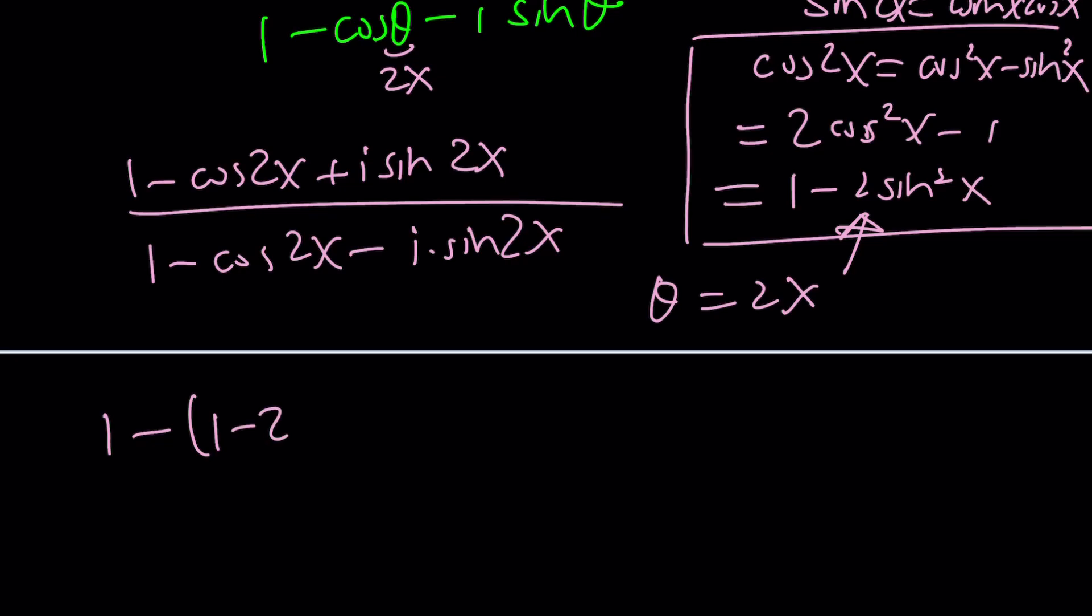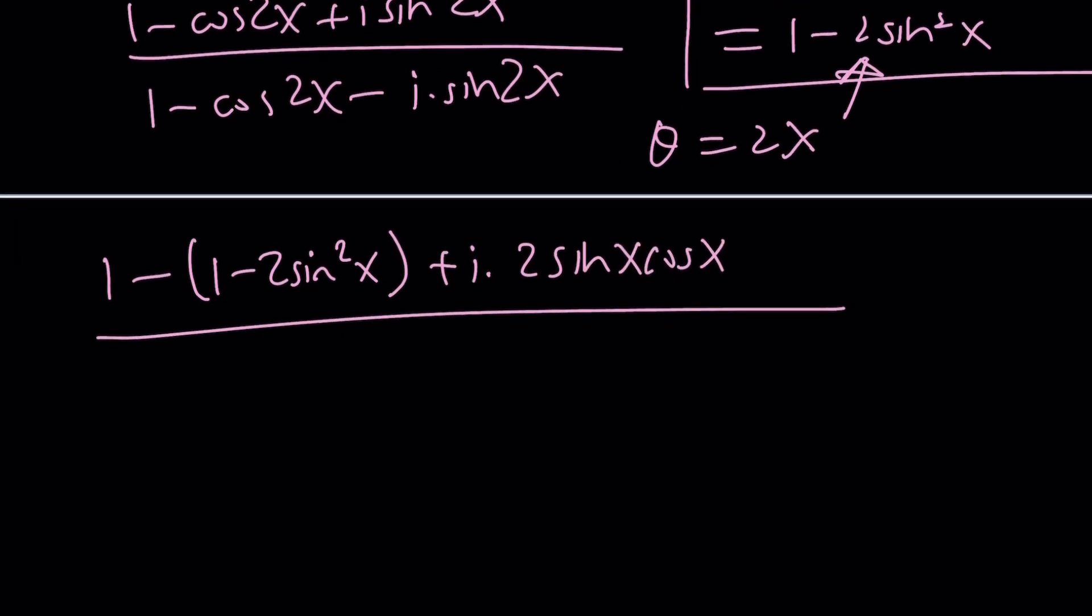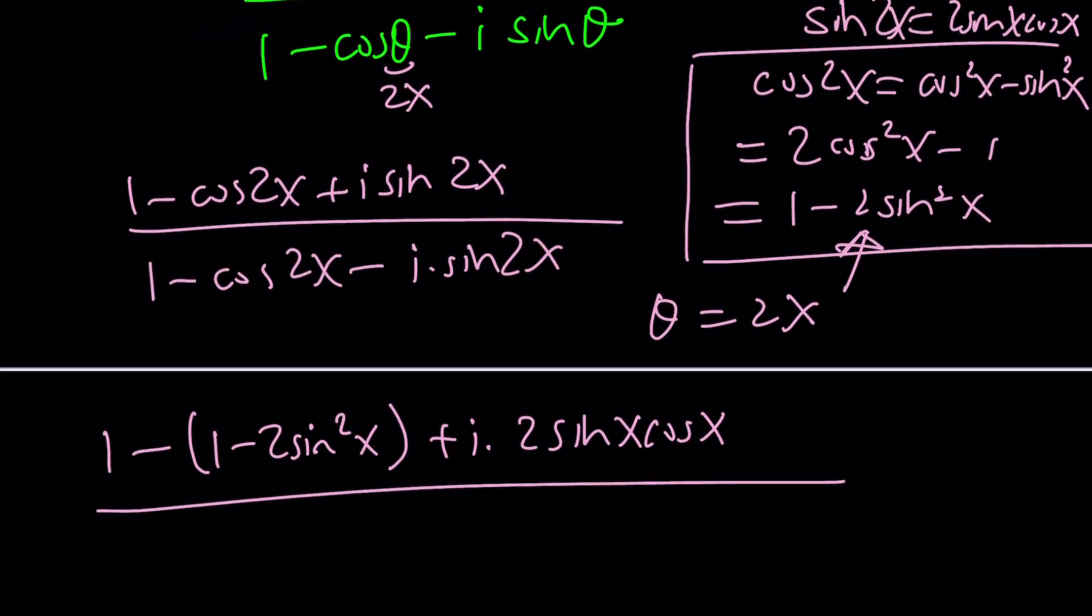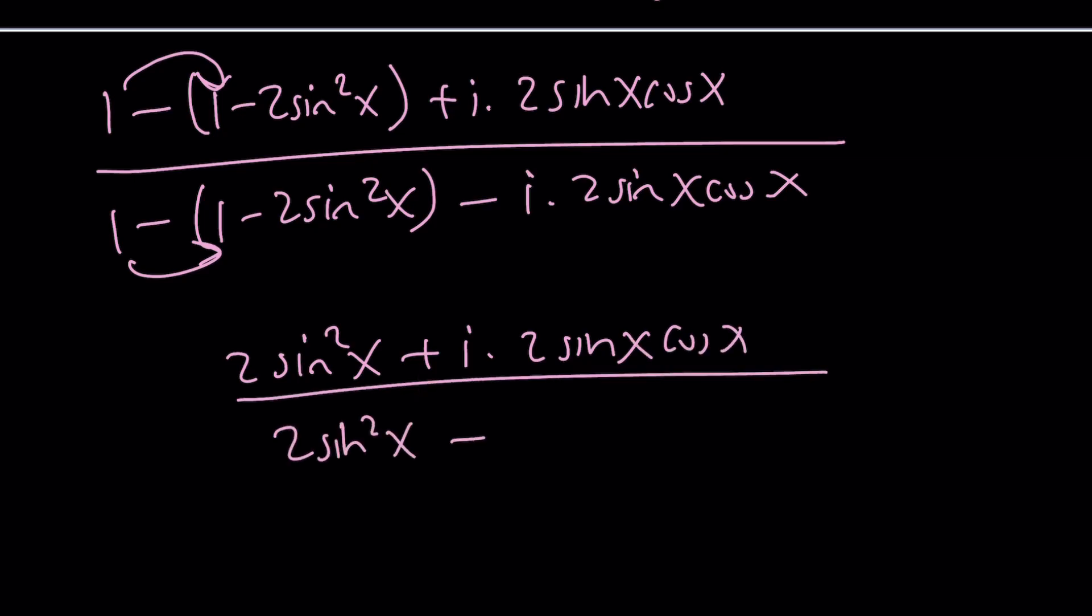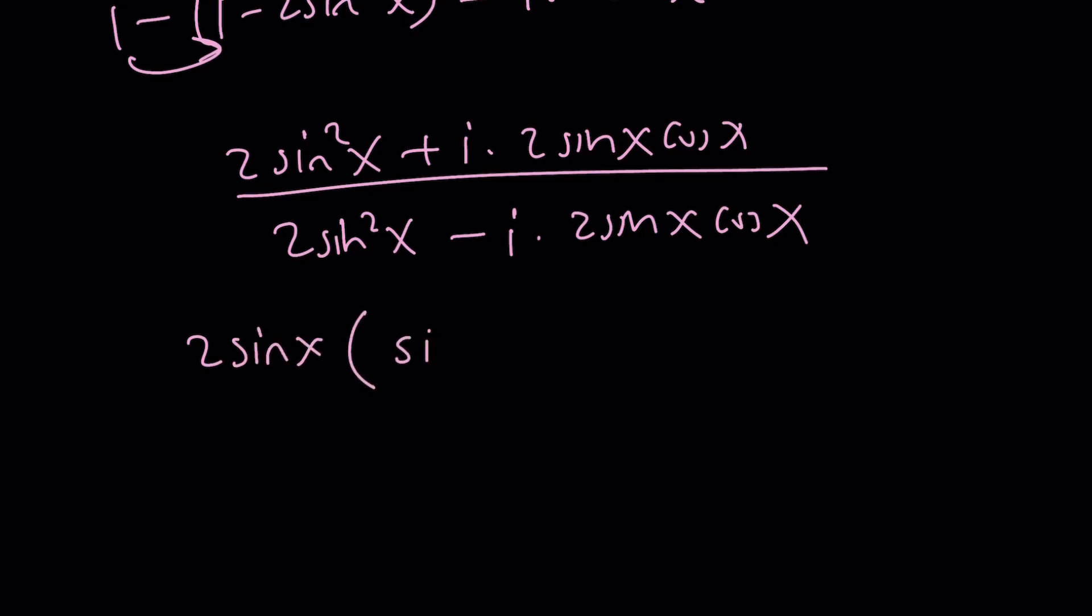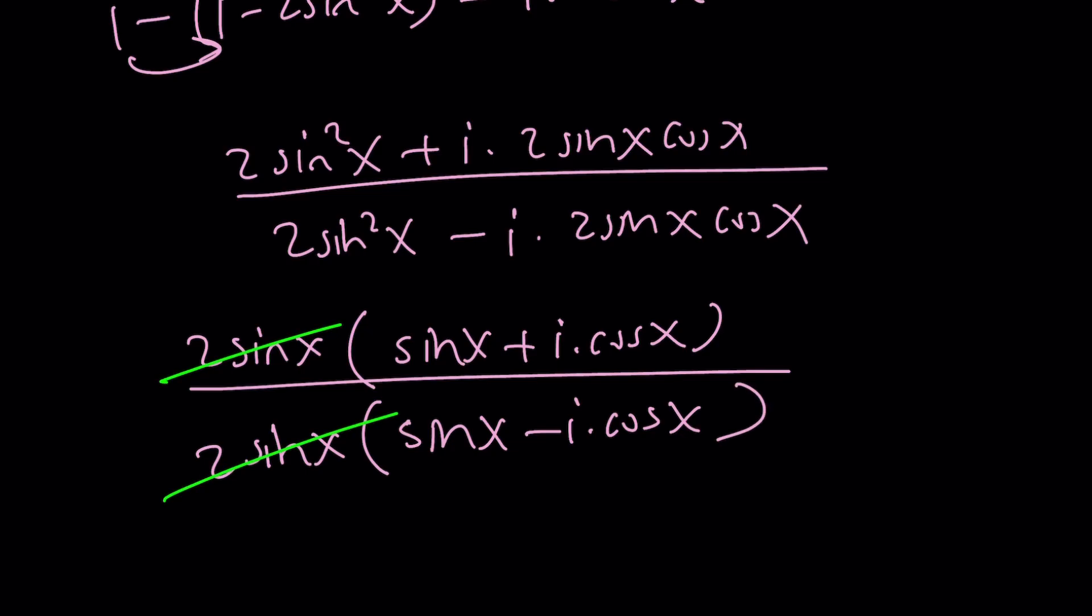I'm going to be using 1 minus 2 sine squared x here, plus i times 2 sine x cosine x, which is the double angle for sine. Here, I want to use the same formula, but this time I have a minus sign. And now we're going to simplify. 1 minus 1 is 0, 1 minus 1 is 0. We're going to get a positive 2 sine squared x plus i times 2 sine x cosine x divided by 2 sine squared x minus i times 2 sine x cosine x. We can factor out 2 sine x in the numerator. That will give me sine x plus i cosine x. And in the denominator, I can factor out 2 sine x. That gives me sine x minus i times cosine x. 2 sine x cancel out.